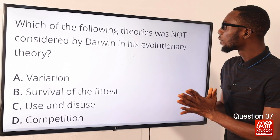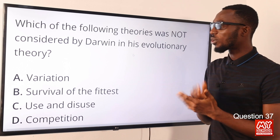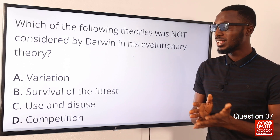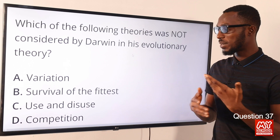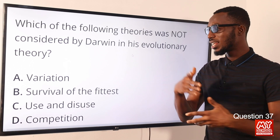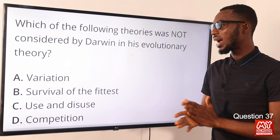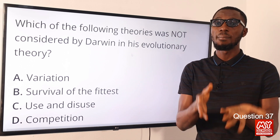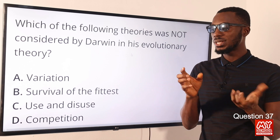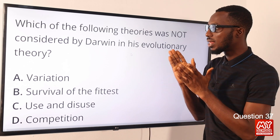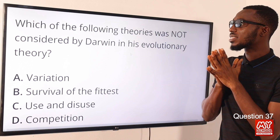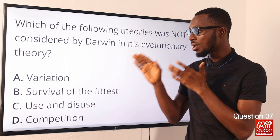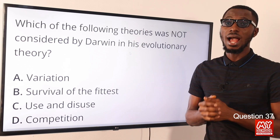Question 37. Which of the following theories was not proposed by Charles Darwin in his evolutionary theories? Darwin looked at survival of the fittest, natural selection, and competition due to environmental pressure. The person who actually put forward use and disuse was Jean Lamarck. He also talked about the inheritance of acquired traits, which is incorrect. The theory not proposed by Darwin is use and disuse — that is by Jean Lamarck. The correct option is option C for use and disuse.